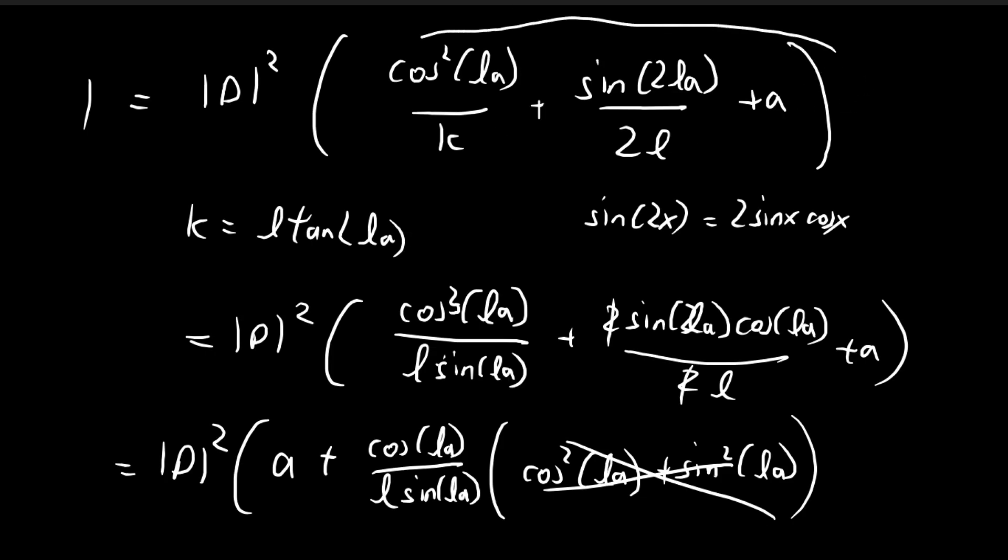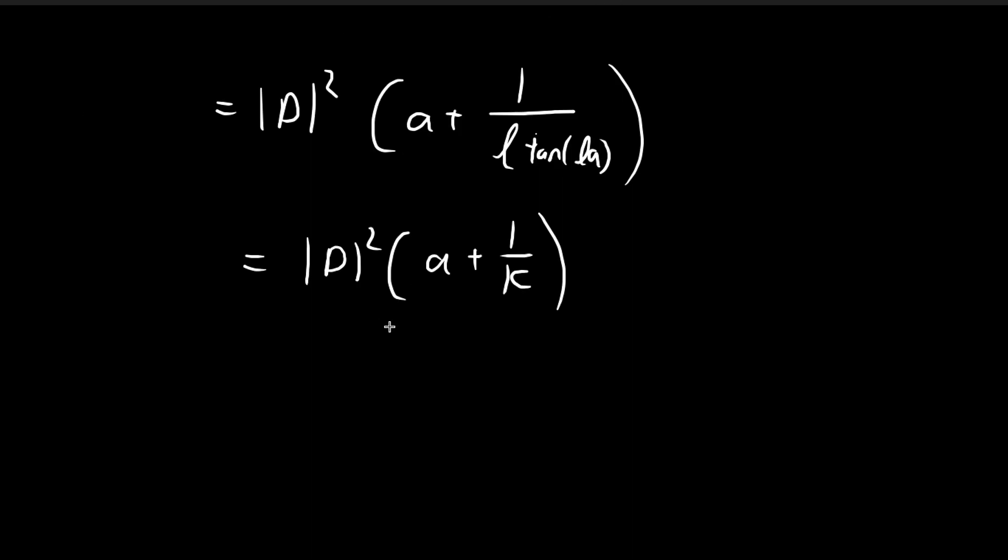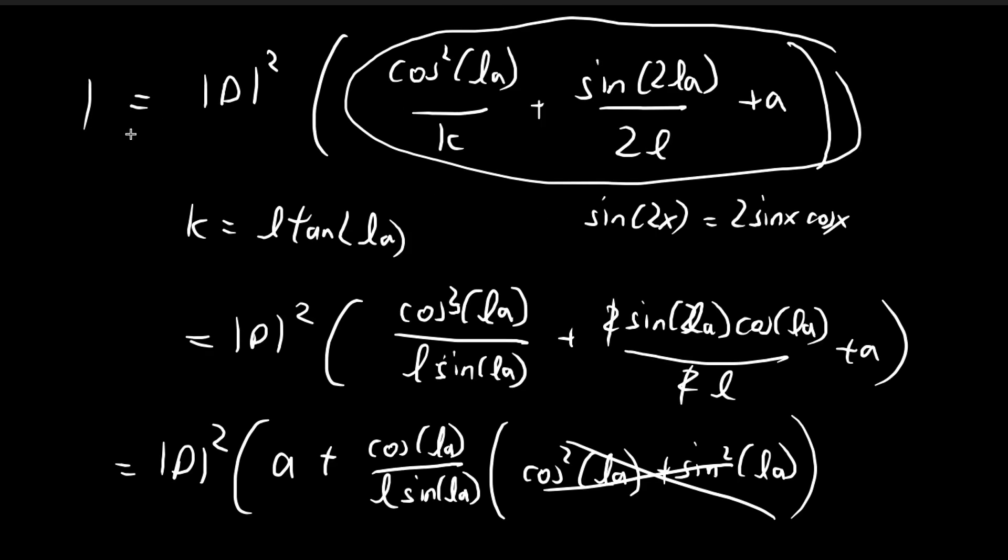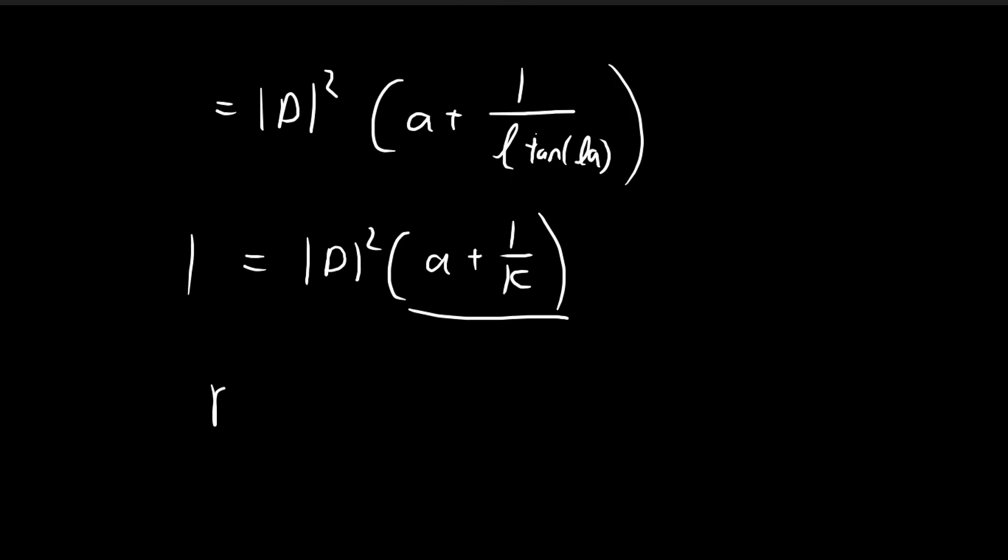So compared to this, obviously, this result that we have is a lot cleaner. And then we know that this is equal to 1. So that implies that d is equal to 1 over the square root of a plus 1 over k.